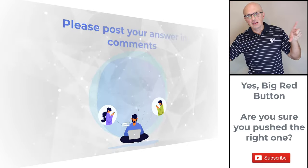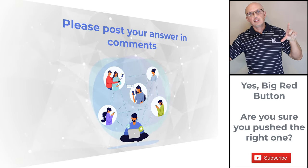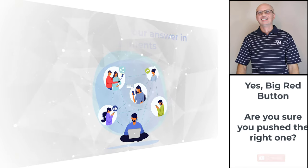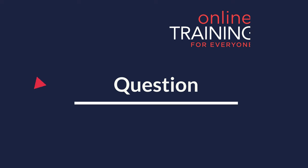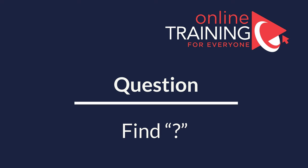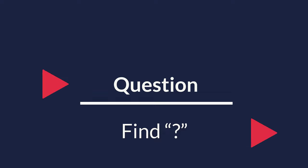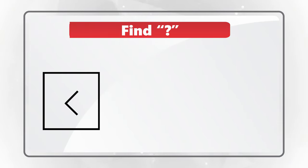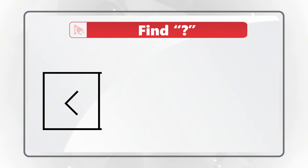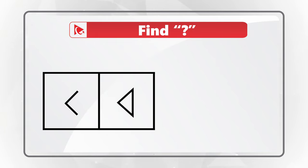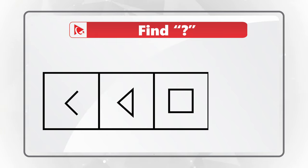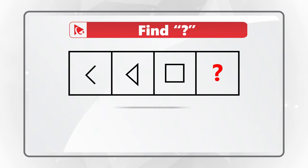Hopefully you've nailed this question on your own and now know how to answer similar problems in the test. Here's a wonderful question to test your analytical skills. You're presented with a series of shapes in boxes. The first box has an arrow pointing left, the second box has a triangle pointing left, the third box has a square, and then comes the box with the missing shape.